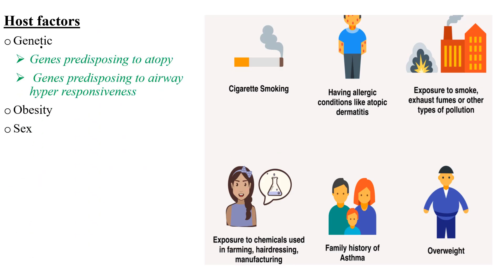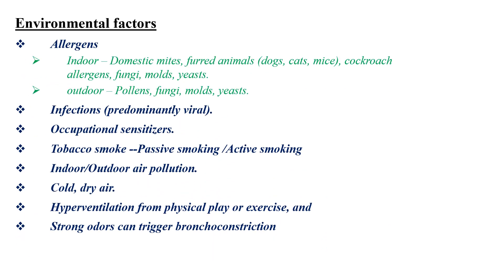Atopic disease runs in the family — genes predispose to atopy. Asthma is more common in obese children and it is more common in females than males. Other risk factors include environmental allergens, whether indoor or outdoor; infectious causes, especially viral respiratory tract infection during young age. Children who have bronchiolitis during young age are at high risk of having asthma later in life. Additional risk factors include occupational sensitizers, tobacco smoke (passive or active), indoor or outdoor air pollution, and hyperventilation from physical play, exercise, or strong odors, which can trigger bronchoconstriction.